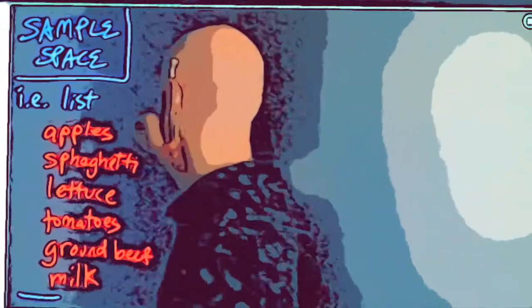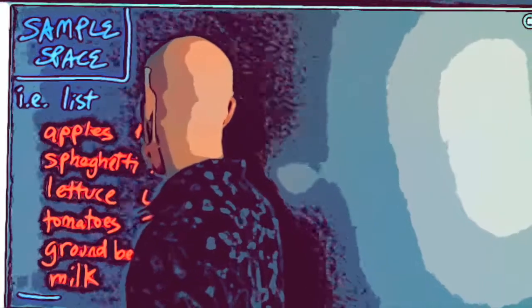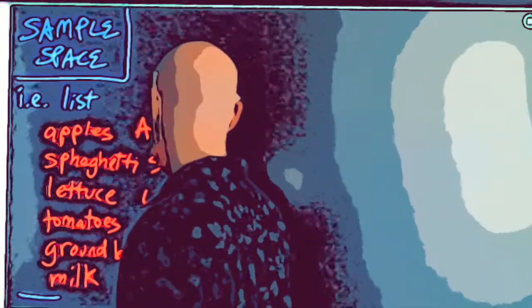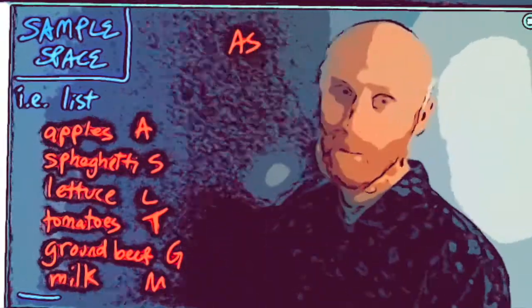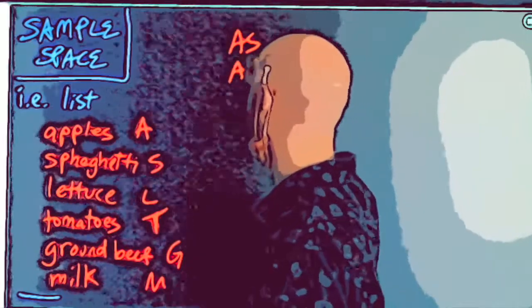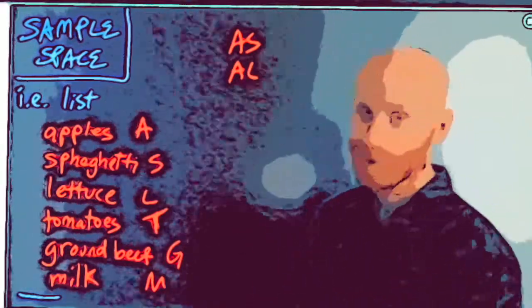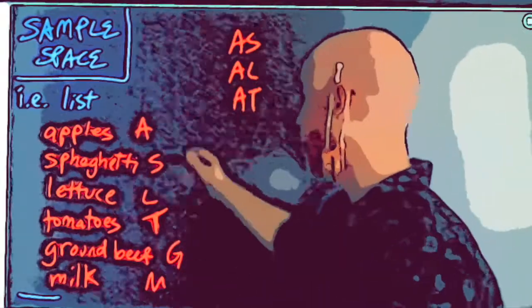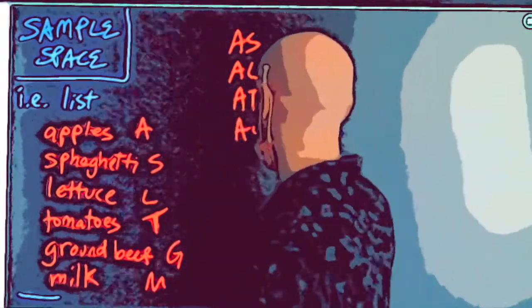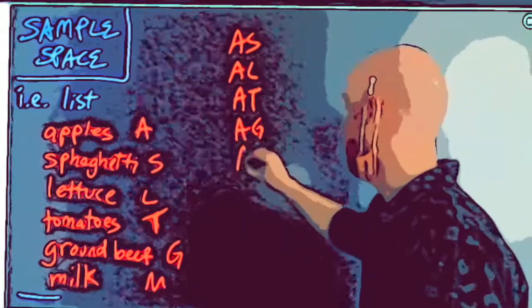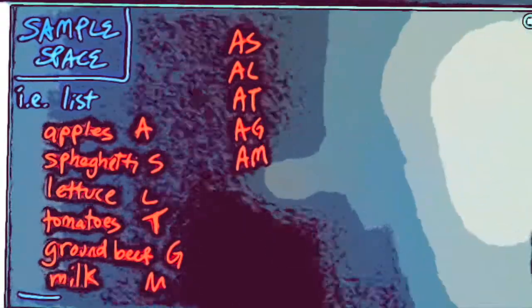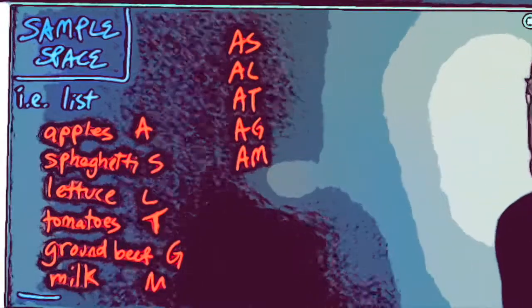I'll abbreviate: apples = A, spaghetti = S, lettuce = L, tomatoes = T, ground beef = G, and milk = M, just to make list-writing easier. I can forget apples and spaghetti, apples and lettuce, apples and tomatoes, apples and ground beef, apples and milk. That's all the possibilities if apples is one of the things I forgot.